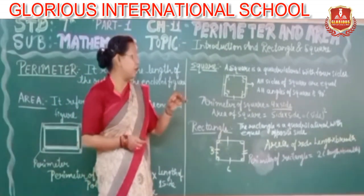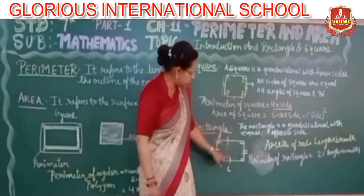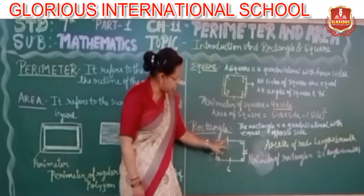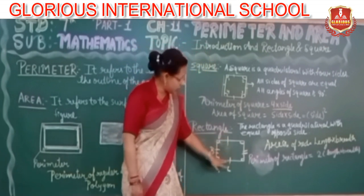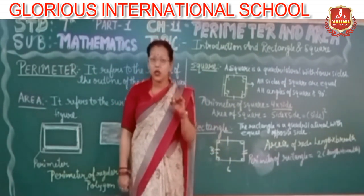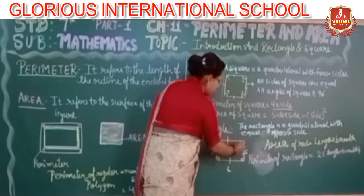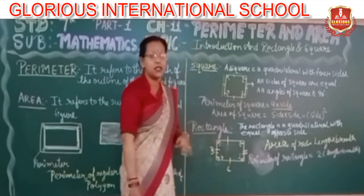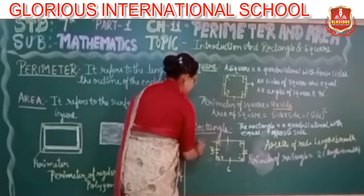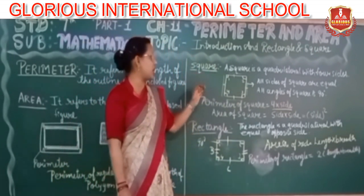Now, rectangle. A rectangle is also a type of quadrilateral, but with equal opposite sides. In a rectangle, opposite sides are equal — the top and bottom are equal, and the left and right sides are equal. A rectangle also has 4 right angles, each measuring 90 degrees.